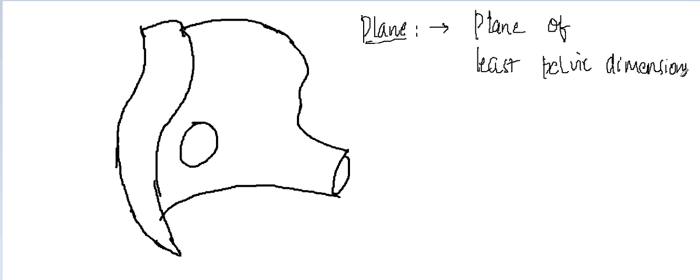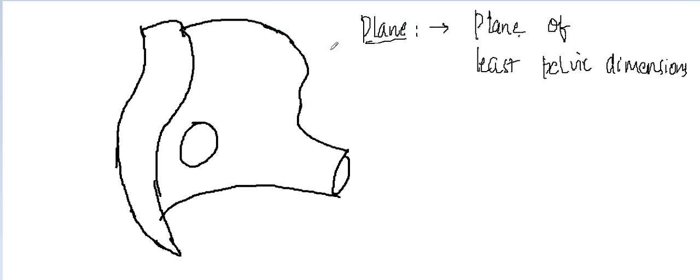The plane of least pelvic dimensions is a line joining the lower border of the pubic symphysis to the tip of the ischial spines and posteriorly to the tip of the fifth sacral vertebrae — not the coccyx.